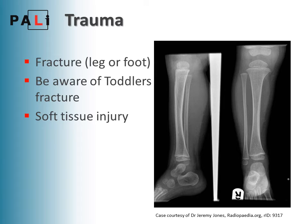Trauma — kids fall off things and break things, just like adults. The toddler's fracture is one to be particularly aware of. It's a fracture of the distal tibia, not the fibula. It can be caused by minimal trauma or a twisting action, and it's usually a spiral or oblique fracture. They're quite hard to see on the x-ray, so you have to have a good look.